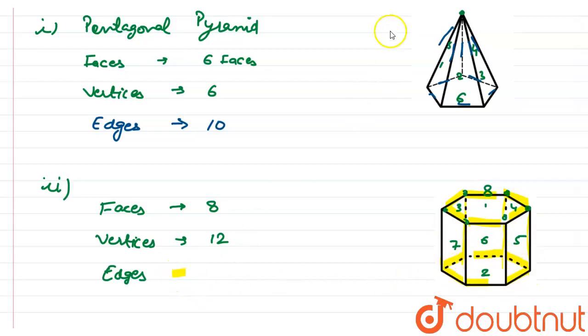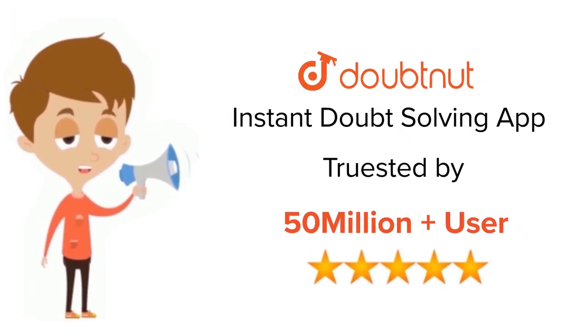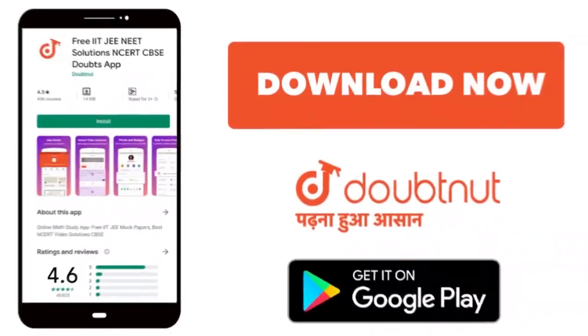Okay, so the pentagonal pyramid has six faces, six vertices, and ten edges. And this hexagonal prism has eight faces, twelve vertices, and eighteen edges. Thank you, I hope it's clear. For class 6 to 12, IIT-JEE and NEET level, trusted by more than five crore students. Download Doubtnet app today.